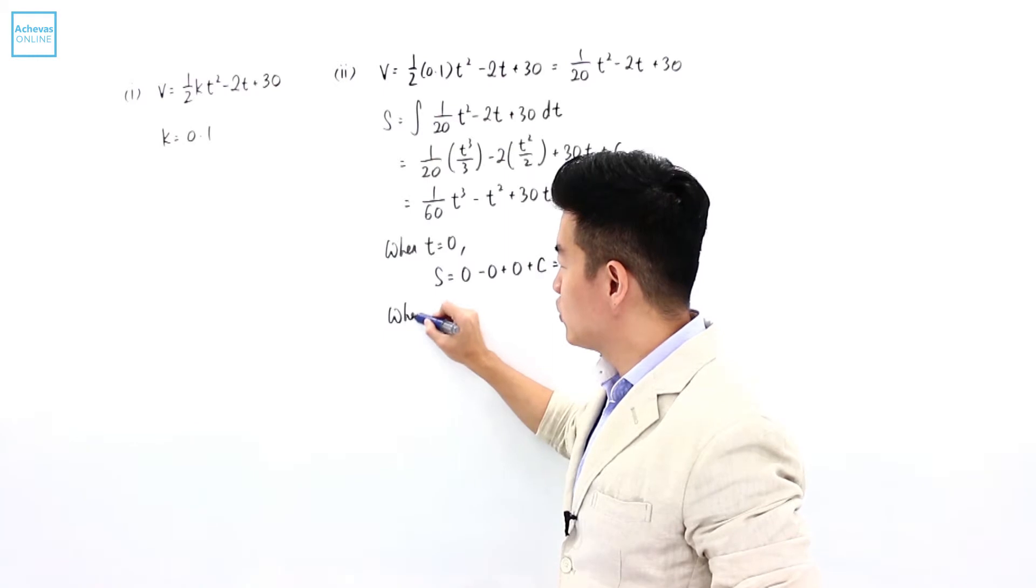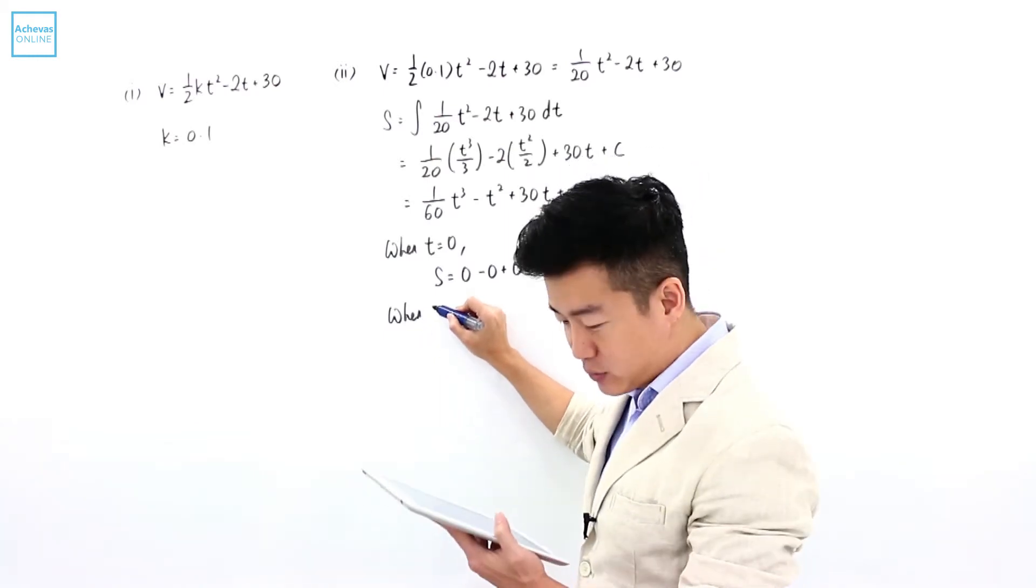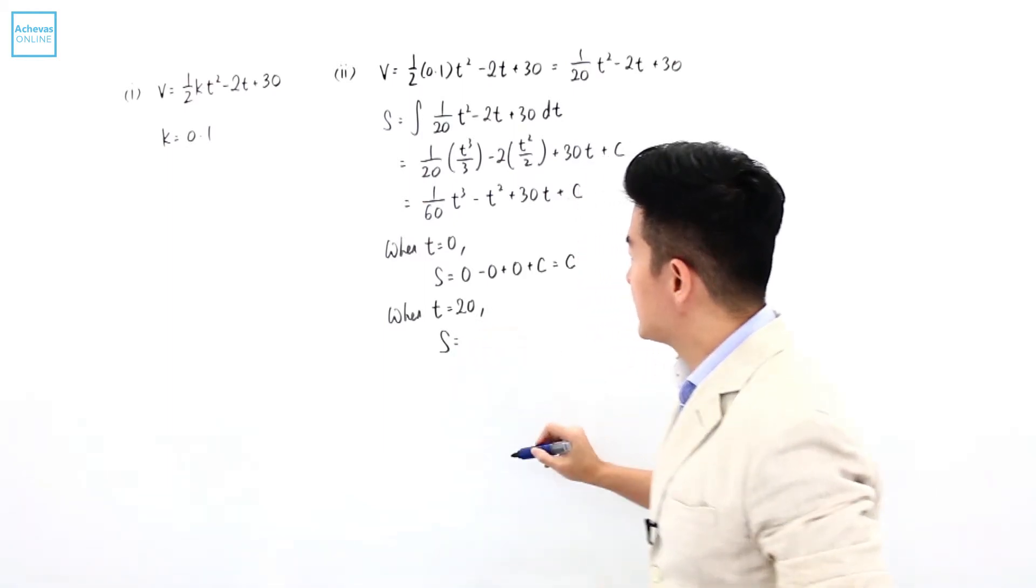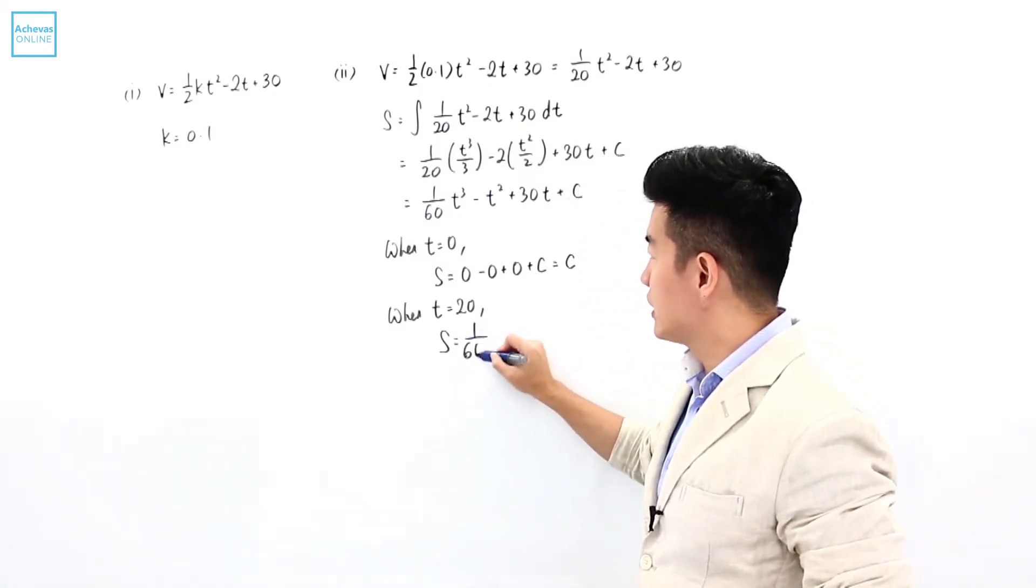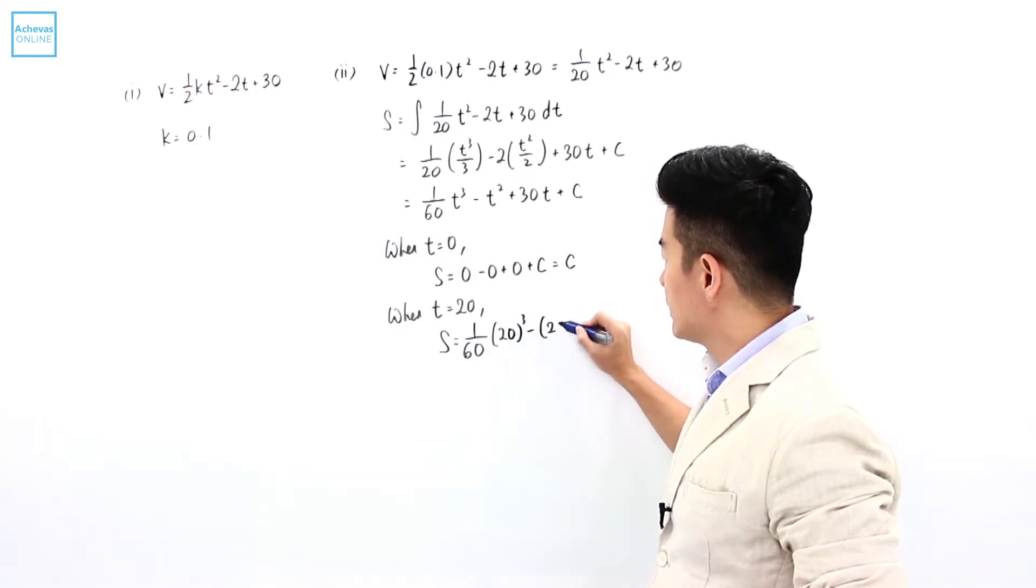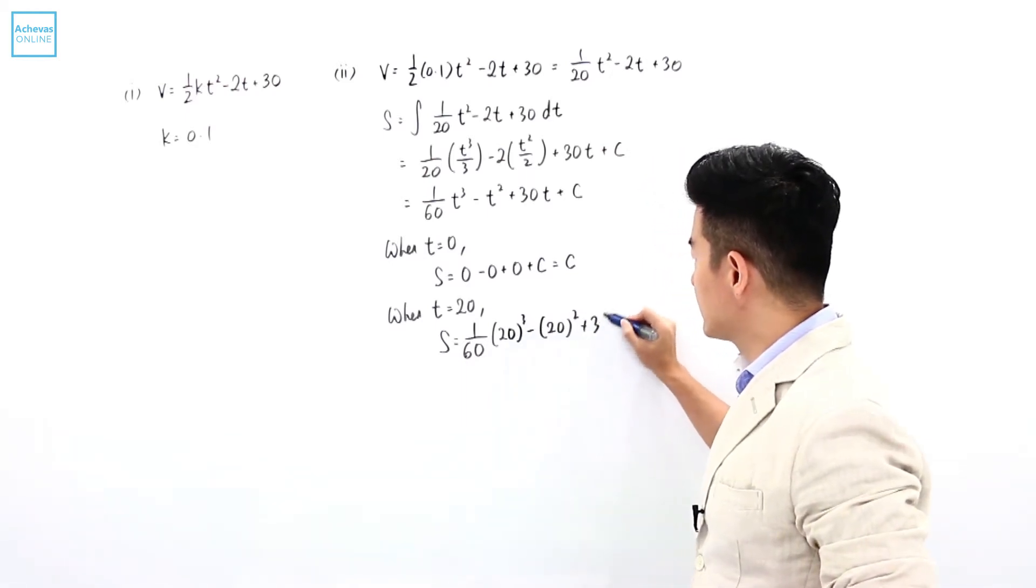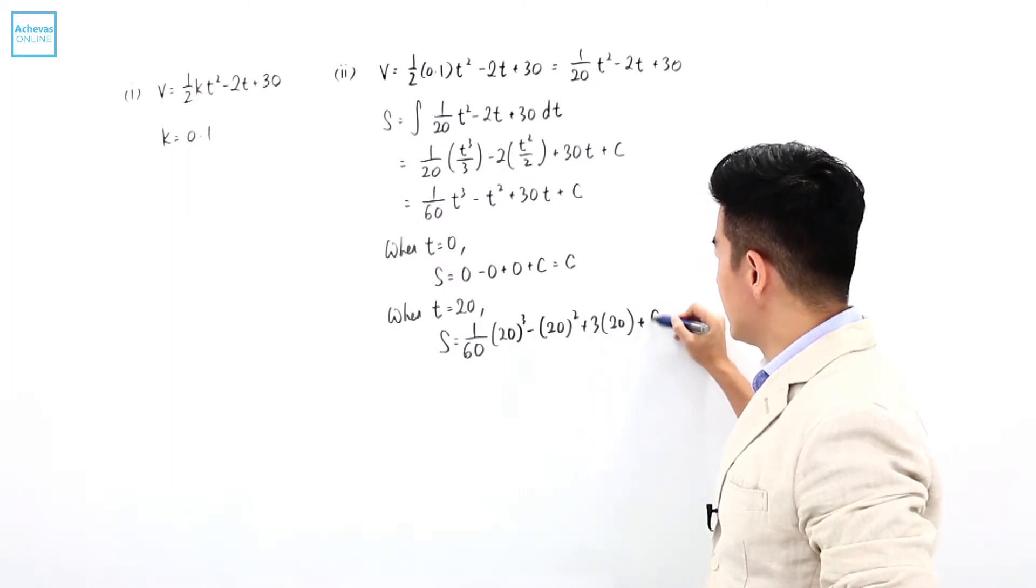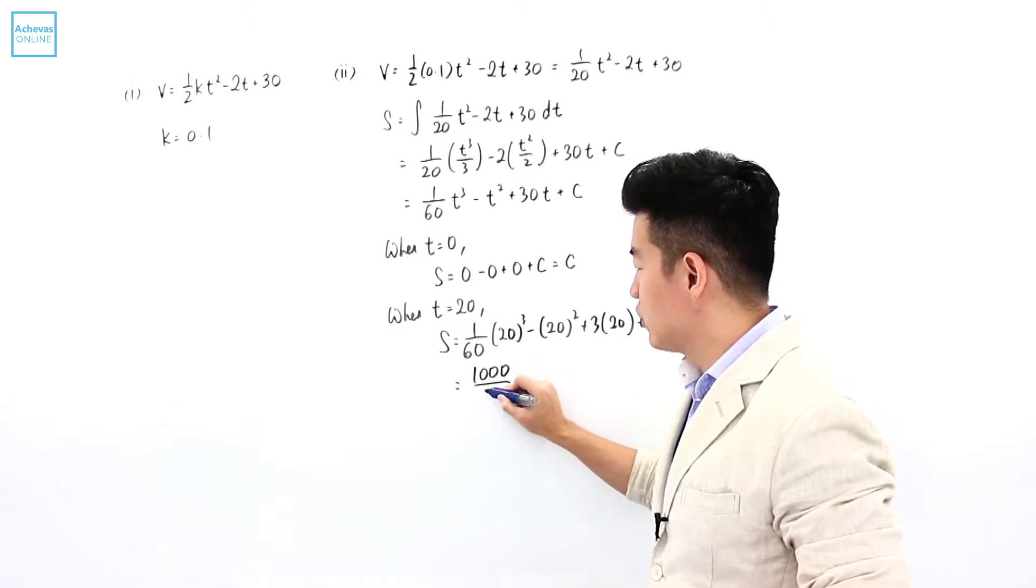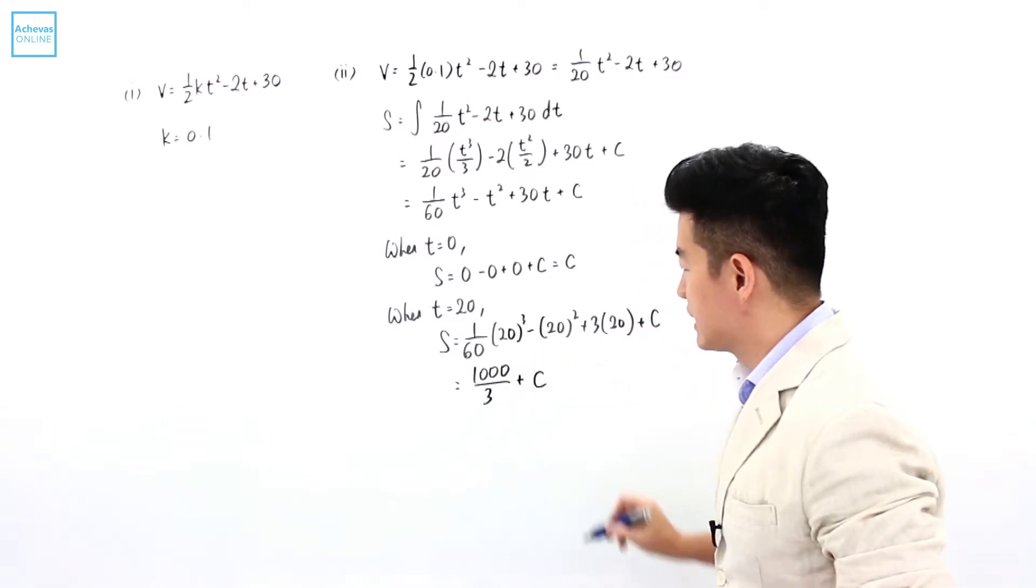And when it passes through signal y, that is 20 seconds later, so t is equal to 20. The displacement is going to be 1 over 60 multiplied by 20 cubed minus 20 squared plus 30 times 20 plus c. And this is equal to 1,000 over 3 plus c.